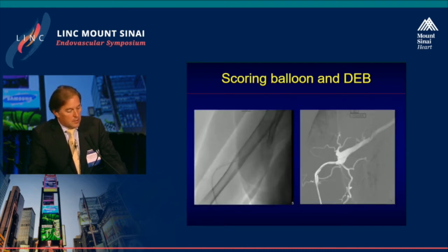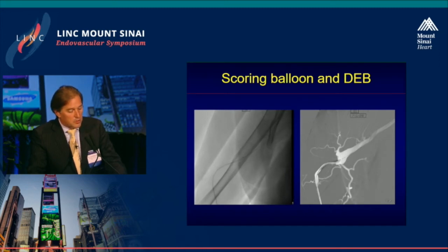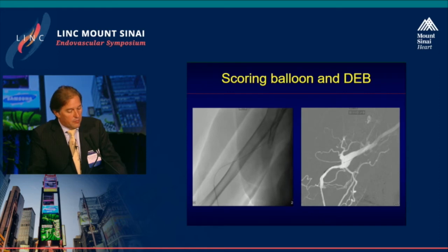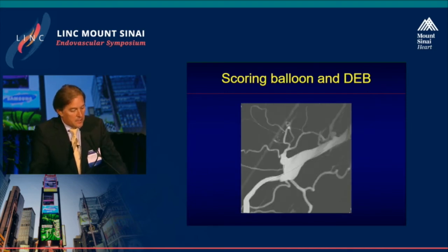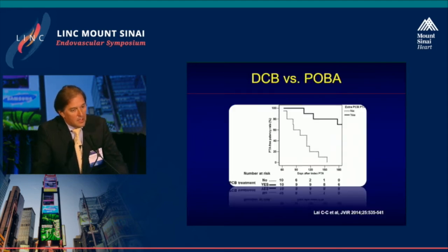Here is an example of a typical focal stenosis treated first with a scoring balloon. There's nothing very special about it, but for very tight and diaphragmatic lesions this is a good option. Afterwards you follow up with a drug-eluting balloon, as you can see here. This is the balloon in place, and this is the final angiographic outcome — you can see a very smooth transition to the wider part of the vein.